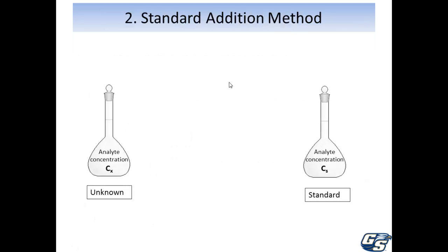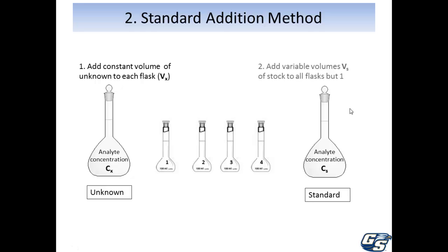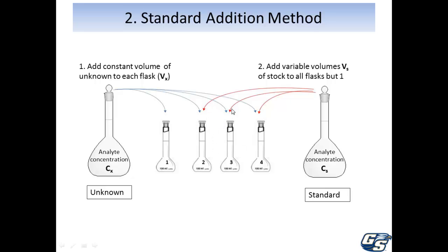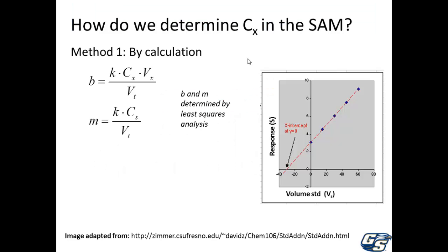For the standard addition method, you have a solution of the analyte at a known concentration but no internal standard, and you make up solutions a bit differently. You add a constant volume of the unknown to each flask — not just one, but all of them. Then you add variable volumes of the stock solution to all flasks except one, which receives zero of the stock. You can then determine the equation of that line by linear regression and least squares analysis.